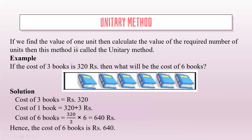Unitary method. If we find the value of one unit, then calculate the value of the required number of units, this method is called the unitary method. For example, if the cost of three books is 320 rupees, then what will be the cost of six books? The cost of three books is 320 rupees, so the cost of one book will be 320 divided by 3, and the cost of six books will be 320 divided by 3 multiplied by 6, that is 640 rupees. So the cost of six books is 640 rupees.